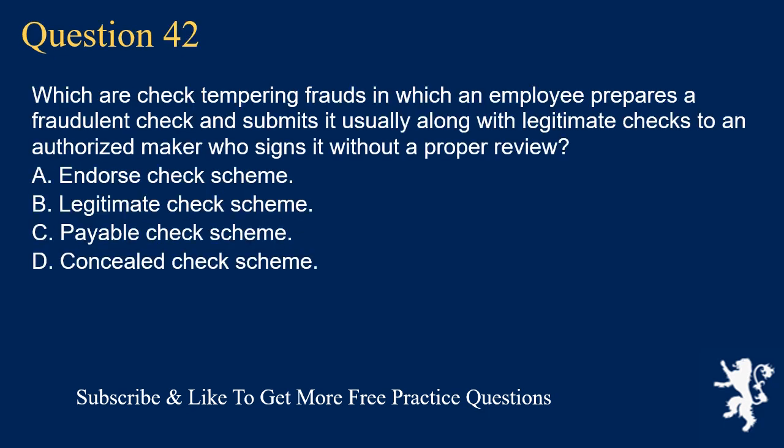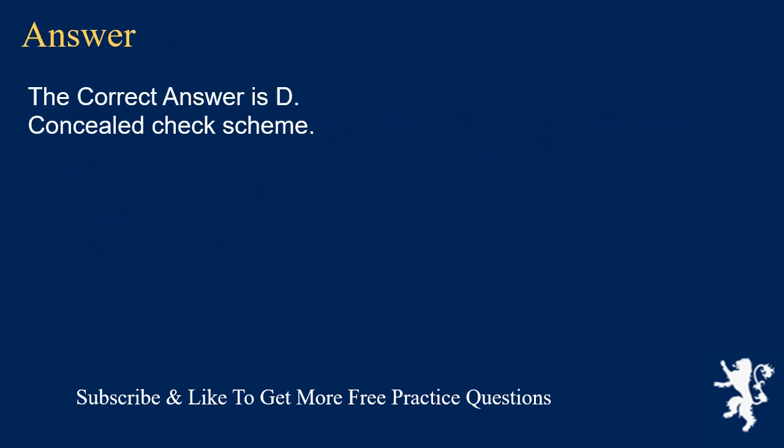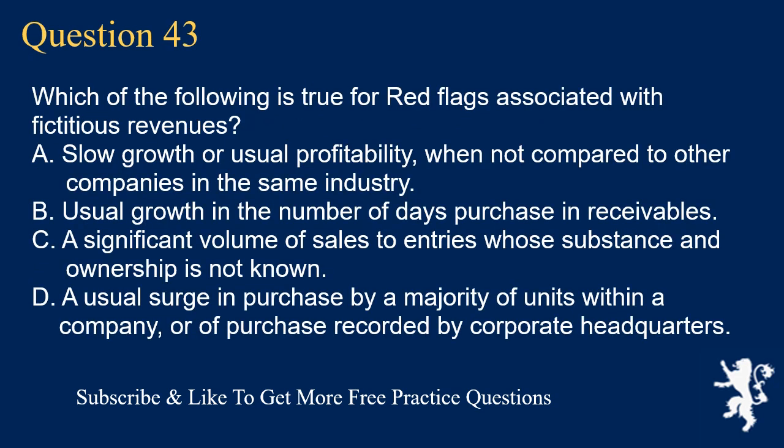Question 42: Which are check-tampering frauds in which an employee prepares a fraudulent check and submits it, usually along with legitimate checks, to an authorized maker who signs it without a proper review? A. Underscore check scheme. B. Legitimate check scheme. C. Payable check scheme. D. Concealed check scheme. The correct answer is D. Concealed check scheme.